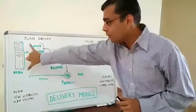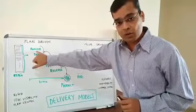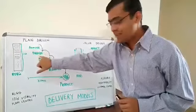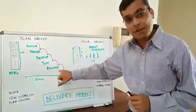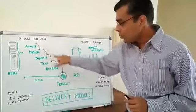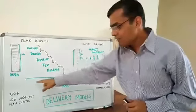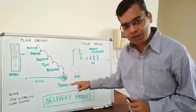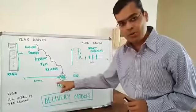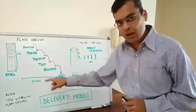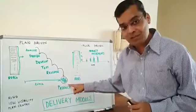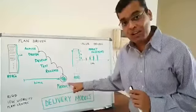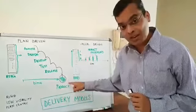So once they have the requirement, they will go through the analysis, then the design, then the development, test and finally the release phase. So this is the waterfall model where across the entire duration of the project, the customer will not be able to see anything about the product till in the end when it's released to the customers. That's the first time he or she will get to see what the product looks like.